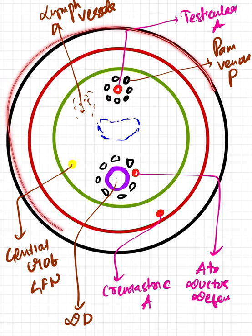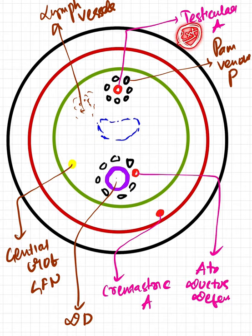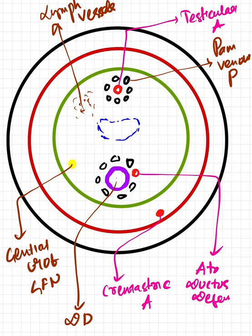The spermatic cord has three surrounding fascial layers. The external spermatic fascia is formed by the aponeurosis of the external oblique muscle. The cremasteric fascia contains loops of skeletal muscle connected by areolar tissue. The internal spermatic fascia is formed by the fascia transversalis.